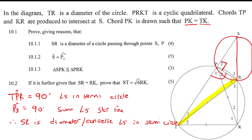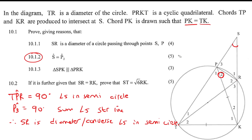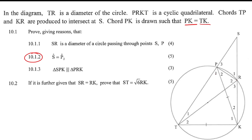The next question is to prove that angle S is the same as P2. We've got to try to prove for five marks that those two are equal. If this whole angle TPR is 90 degrees, and this is P2, then P1 would be 90 minus P2, because we already said that TPR was 90 from earlier. So if this whole thing is 90, then this angle would be 90 minus P2.